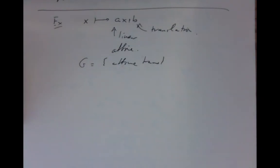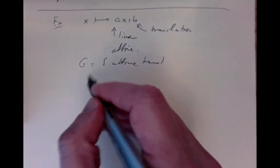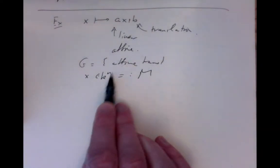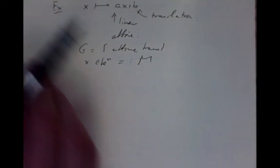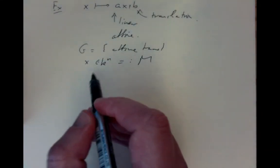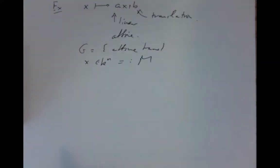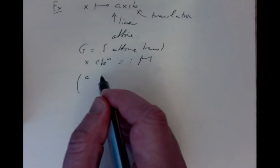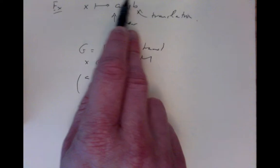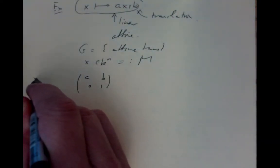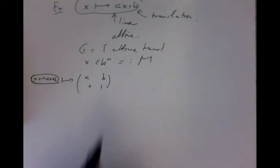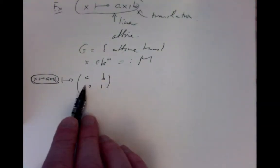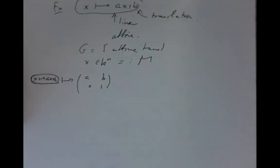It's convenient to note that affine transformations compose according to a rule that can be represented as matrix multiplication. We can associate to the affine transformation x → Ax + b this block matrix, and check that this is a group morphism to the (n+1)-by-(n+1) matrices. This makes it possible to calculate the Lie algebra and the action of each of the vector fields.